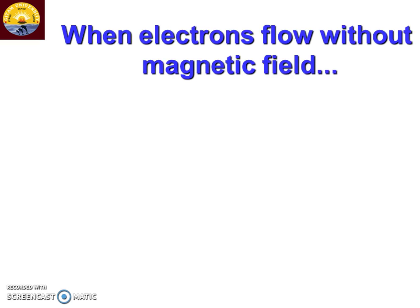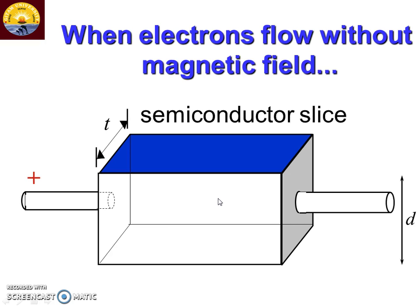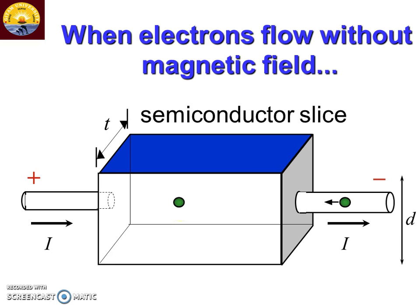In the Hall effect experiment, we consider a semiconducting sample — a rectangular piece. This is the thickness of the sample, this is the length, and this is the width. After considering the semiconducting sample, connect it to the battery: the positive terminal on one side, the negative on the other. So after connecting, there is a flow of current from the positive side to the negative side, and there is a flow of electrons from right side to the left side. We know that electrons always flow opposite to the direction of current. This velocity is called the drift velocity.